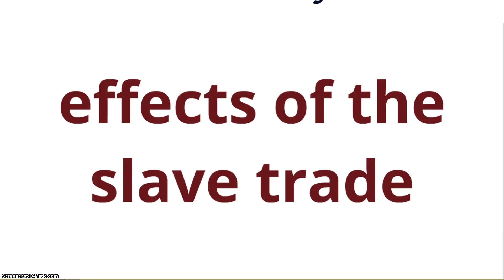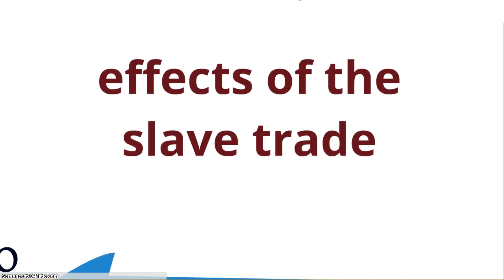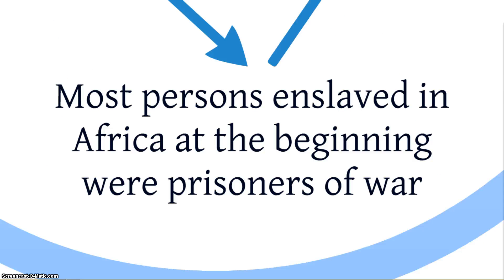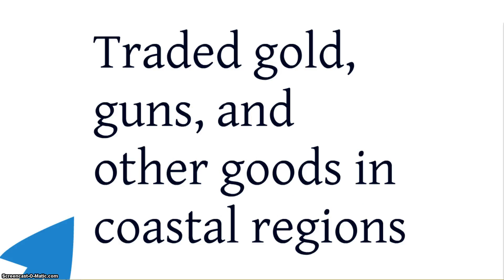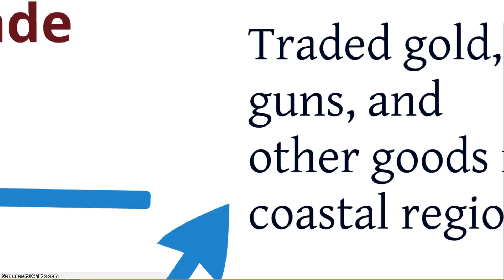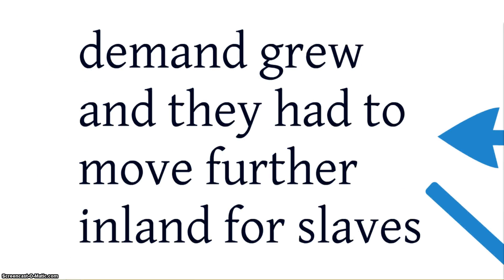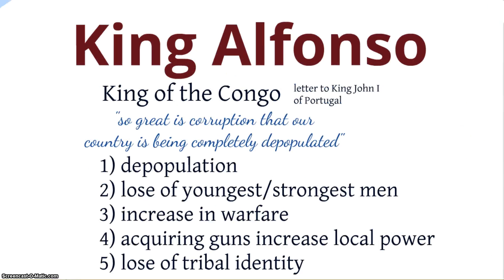Some of the effects of the slave trade: most persons enslaved at the very beginning, in the 15th century, were prisoners of war — and the difference was that a prisoner of war could hopefully be released when their people returned. But what starts happening is that people are taken to totally different lands, and this becomes something that lasts for life. They traded guns, gold, and other goods in coastal regions, and the demand grew so much that slave traders had to move further inland.